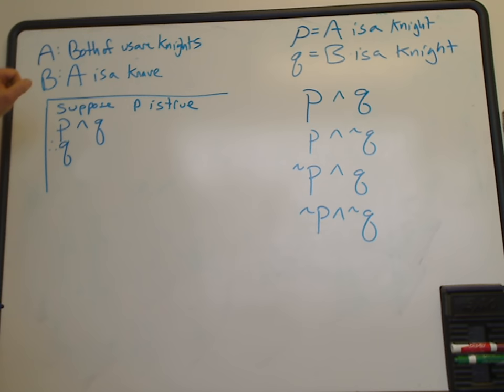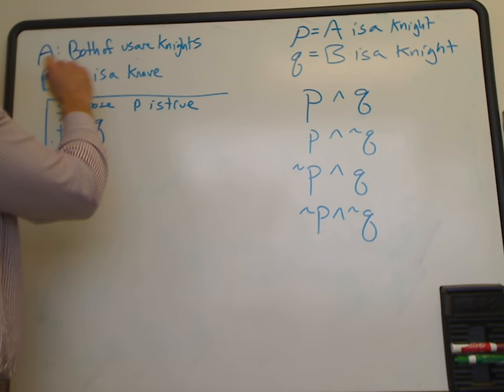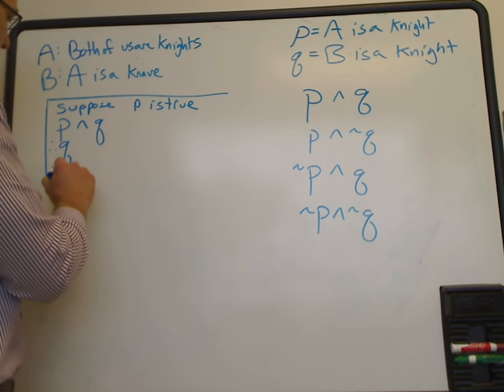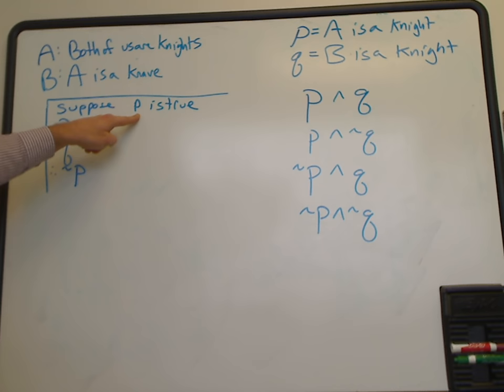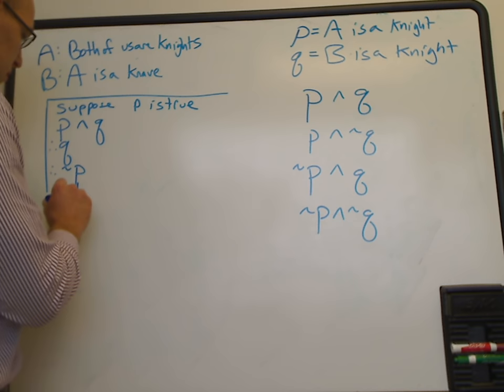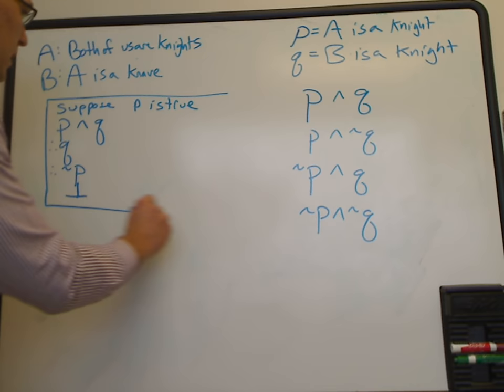If B is a Knight, then B is saying that A is a Knave. Well, if A is a Knave, that equates to not-P. But not-P contradicts our original supposition. Therefore we've reached what's called a contradiction. To show a contradiction in formal notation, we draw an upside-down capital T. It's also good to justify all of these steps.